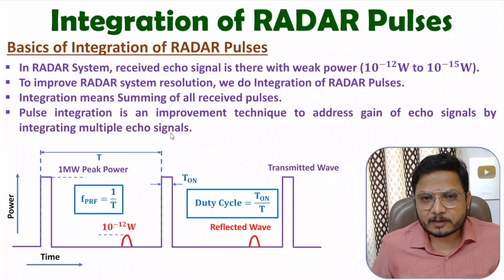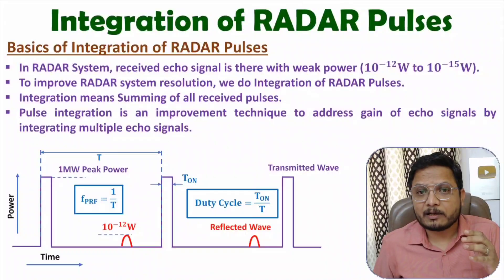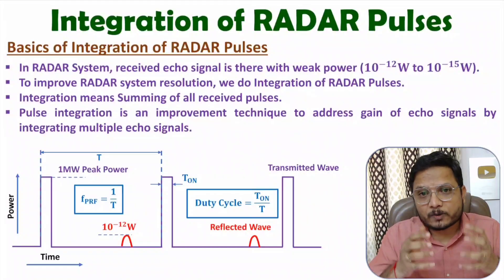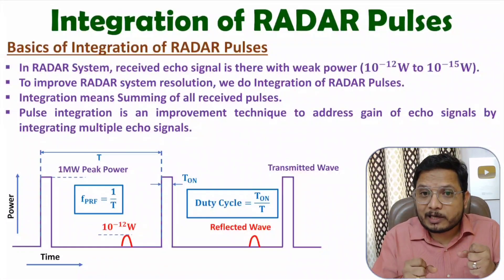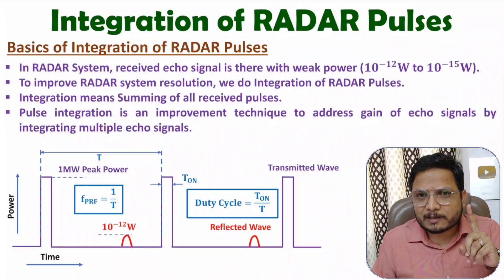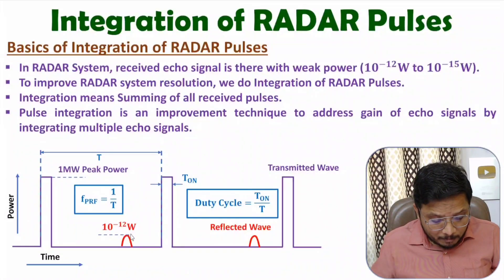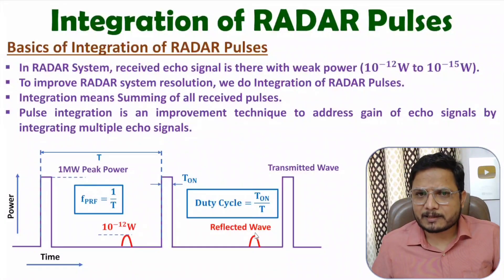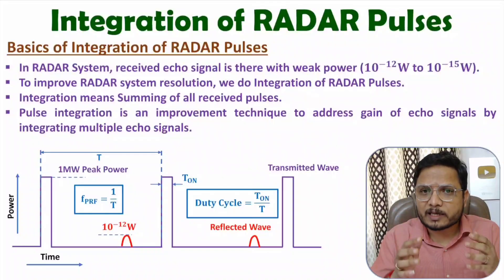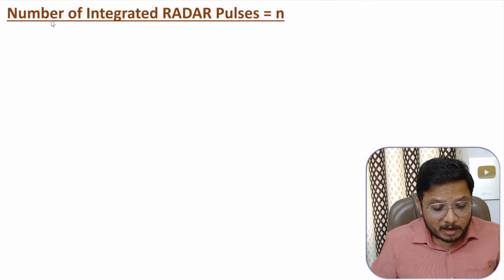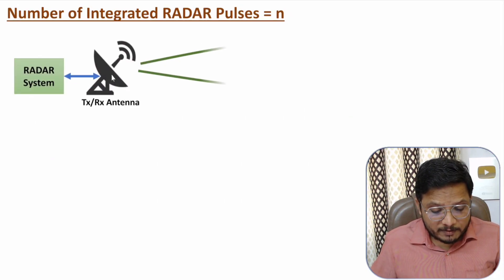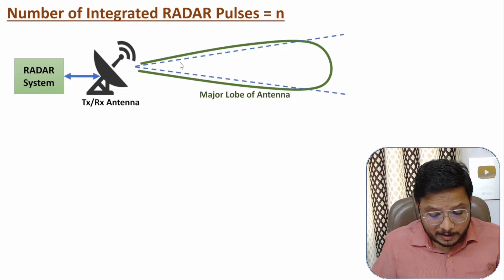Pulse integration is an improvement technique to address gain of the echo signal by integrating multiple echo signals. At the receiver side, by placing an integrator we magnify the received echo signal, and based on that magnification we can optimize the calculation of range of any object. By a single pulse you receive very weak power, but if you sum multiple received signals, the received echo signal strength will increase.